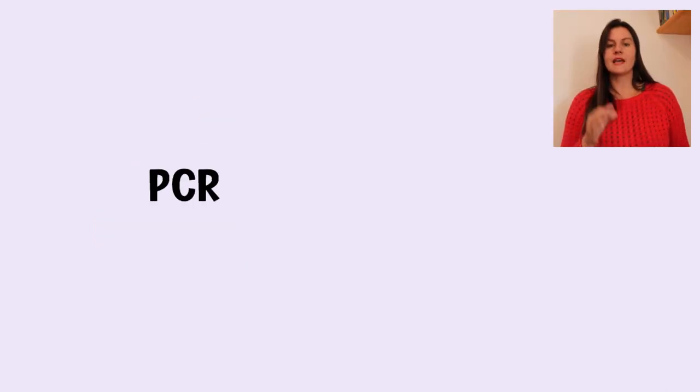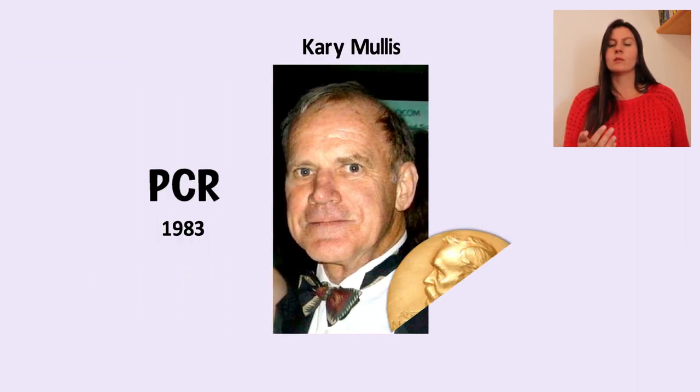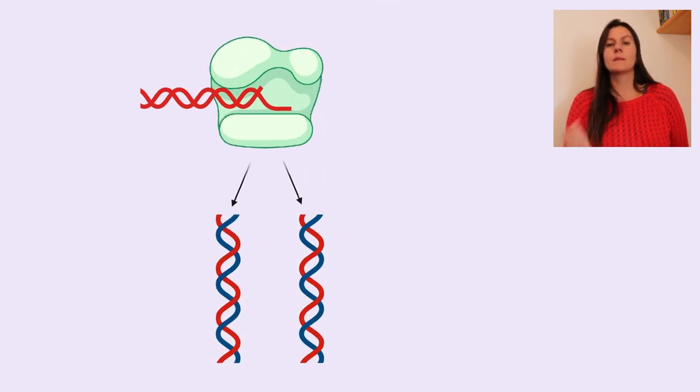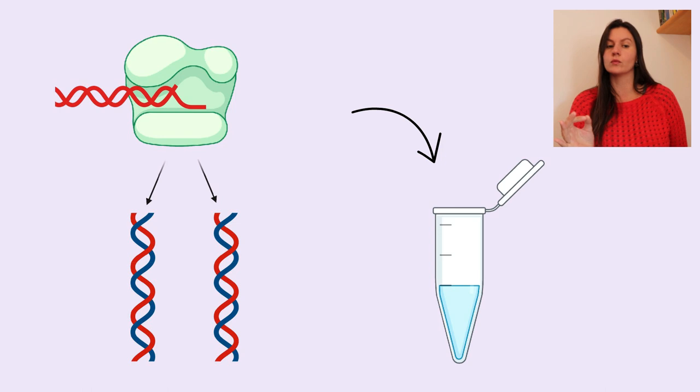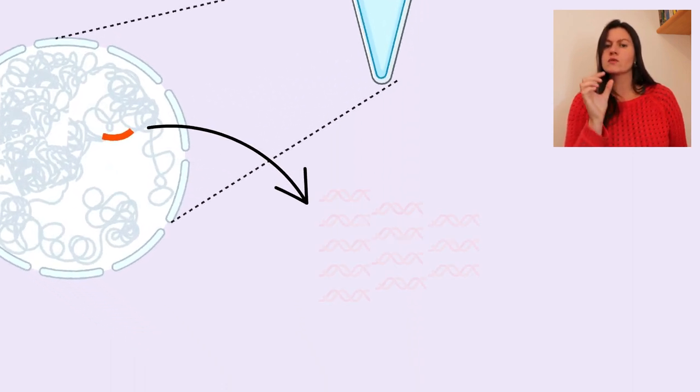A PCR foi desenvolvida no final dos anos 80 por Kary Mullis, que ganhou posteriormente o Prêmio Nobel de Química por esse feito. Na reação de PCR, a DNA polimerase é utilizada para gerar cópias do DNA, mas agora isso acontece in vitro, ou seja, dentro de um tubo. No entanto, não será copiado todo o DNA de uma amostra, mas sim existe um direcionamento para que seja copiado apenas um DNA alvo.